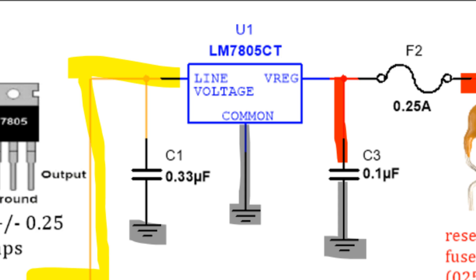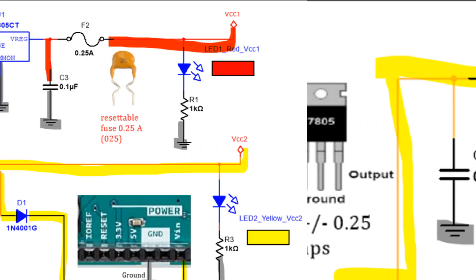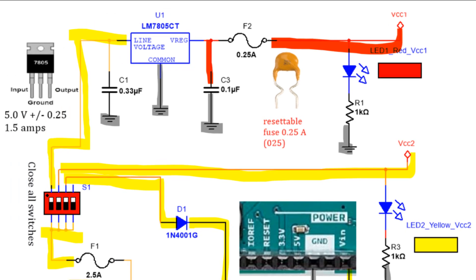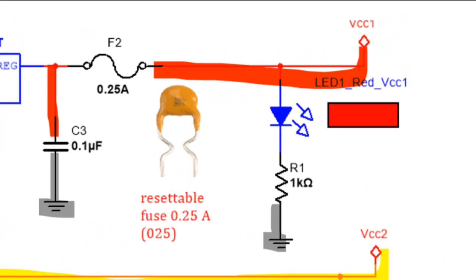This part of the circuit is the output from the regulator and it has the 0.25 amp fuse—it's the smaller one with the text 025 written on it. After that you have a red LED—the anode connects to the 5 volts through a 1k resistor to ground. Then you'll notice there's a terminal labeled VCC1 that's going to go to the motor driver on pin 14.